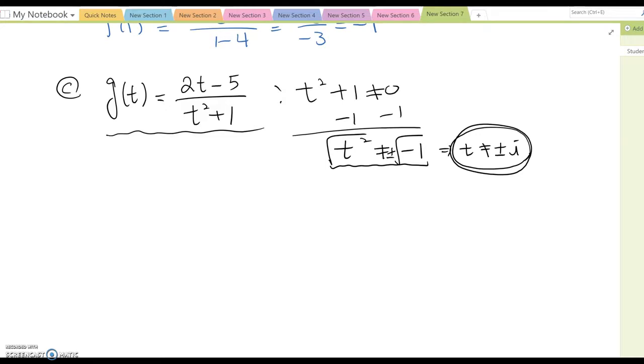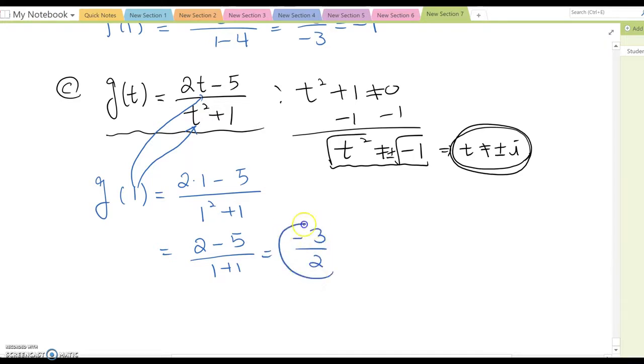Now let's plug some sudden value. g(1), then what do we do? Plug 1 into all t here. So 2 times 1 minus 5 over 1 squared plus 1, so becomes 2 minus 5 over 1 plus 1, therefore negative 3 over 2. That will be the answer.